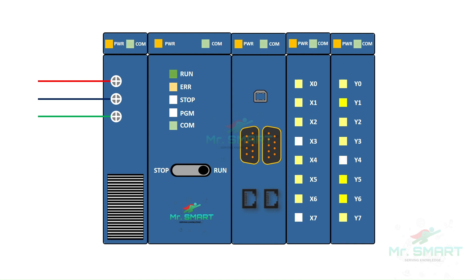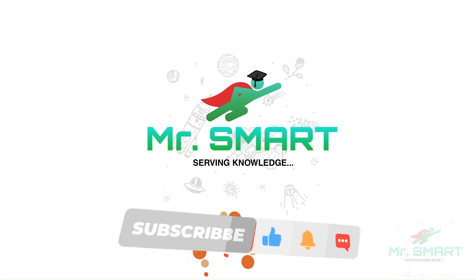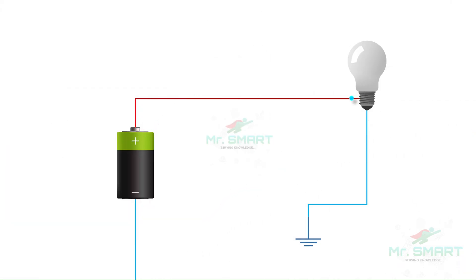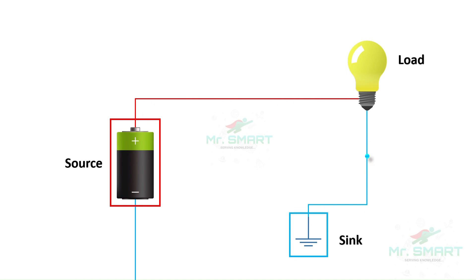Welcome to Mr. Smart Engineering. Generally, in electrical or electronics, the point where the voltage originates to create the current flow is called a source. The point where the current flow returns or ends is called a sink. Here, the positive terminal of the battery acts as the source, providing electrical energy, while the ground acts as the sink, allowing current to flow back. This is the basic principle we will apply when talking about PLC digital I/O modules.